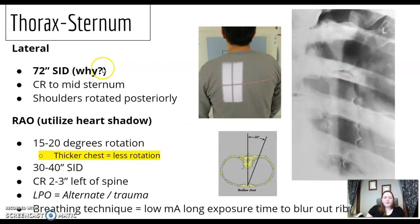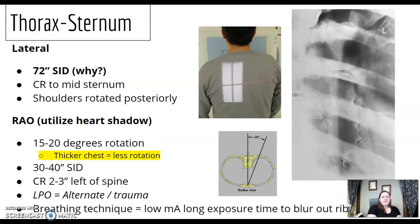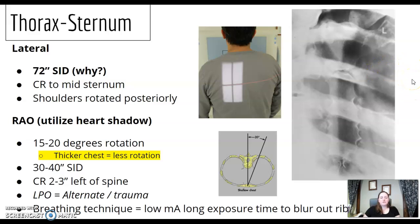Sternum — usually a lateral and a RAO. Why do we use 72 inches for the lateral? Remember that OID between the sternum and the wall bucky — that's a pretty big space, so we use 72 inches to compensate for that. You want to get the shoulders out of the way. RAO: why RAO and not LAO? You want to use the heart shadow. It's a really small oblique — only 15 to 20 degrees, one of the most shallow obliques we do. Thicker chest requires less rotation than thinner chest. The alternate for RAO is LPO — so for a trauma patient who can't stand, you could do an LPO on the table. A breathing technique is used where low mA and increased seconds blur out the ribs around the sternum.